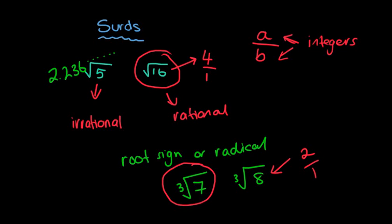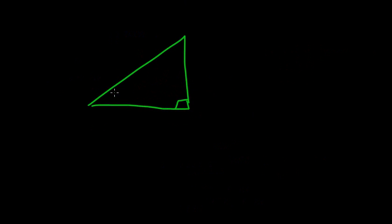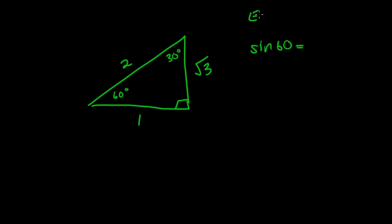Sometimes when we did trigonometry work, we looked at exact values. We looked at that 30-60-90 triangle where the hypotenuse was 2 centimetres, half of 2 made 1 centimetre, and using Pythagoras — 2 squared minus 1 squared — the remaining side is root 3. If you're asked to find the exact value of sine 60, it's root 3 over 2, because it's opposite over hypotenuse. So we leave it as root 3 over 2.